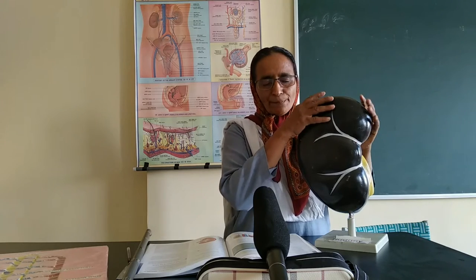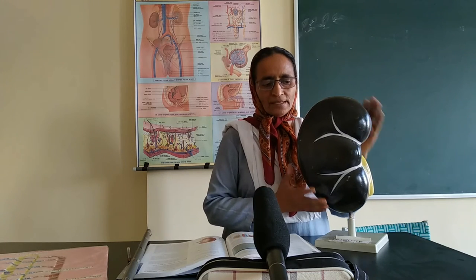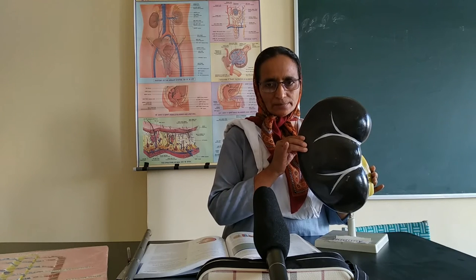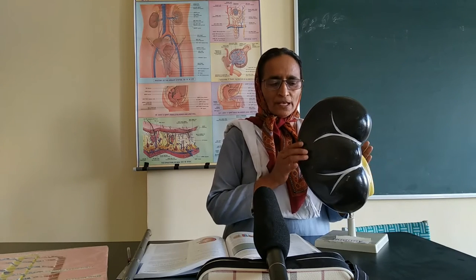You are requested to draw this diagram and learn about the kidney. This model of the kidney you are going to see. This is a bean-shaped organ. The length is 11 cm, the breadth is 6 cm, and the width is 3 cm. It weighs 250 grams in an individual.